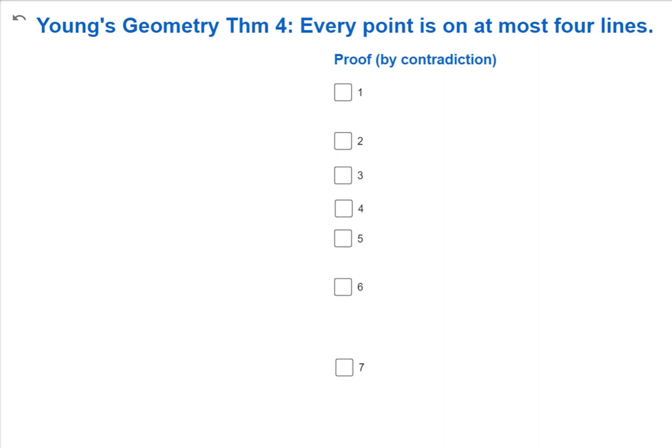Hi, this is Rob Zinn back with possibly the most difficult proof in Young's geometry. I want to talk first about a couple of things we shouldn't do. We want to prove that every point is on at most four lines.